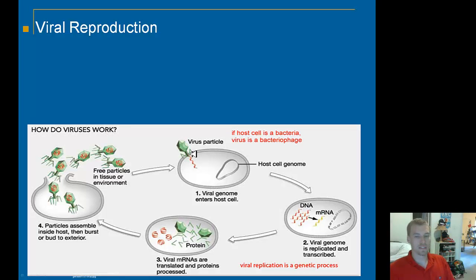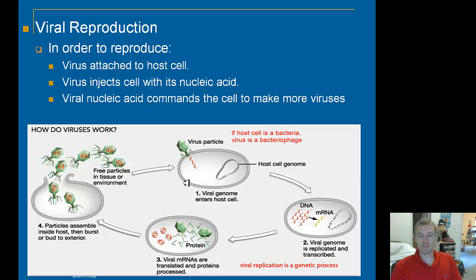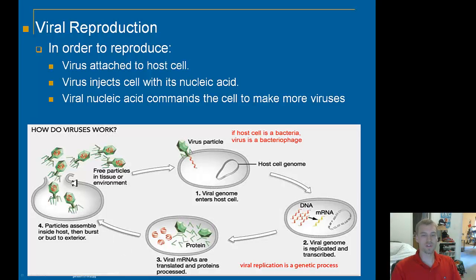So how exactly do viruses reproduce? First, they have to attach themselves to the host cell. Once attached, they inject the nucleic acid — either the DNA or the RNA — inside. Then the nucleic acid commands the cell to make more viruses. It incorporates itself into the genome or takes over the cell's processes to produce more DNA and proteins, which get assembled. When there are so many that the cell is full, it bursts open — we call this a lytic infection. Lysis means the breaking open of a cell.